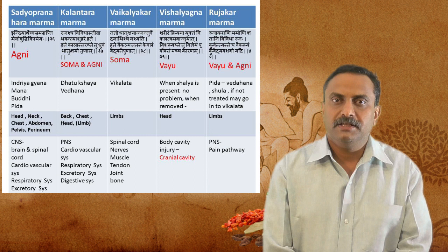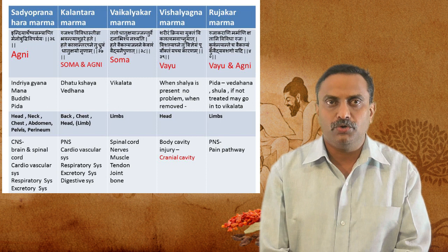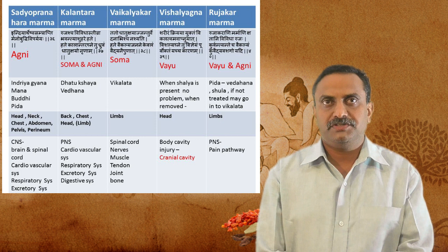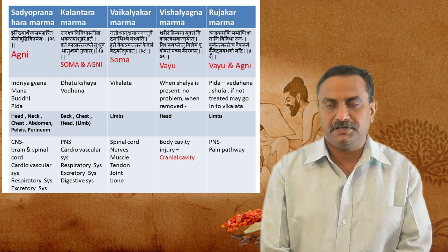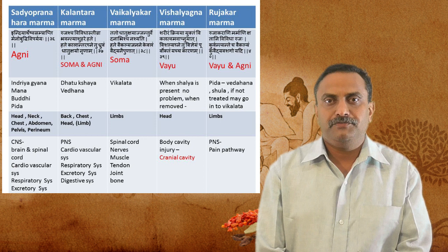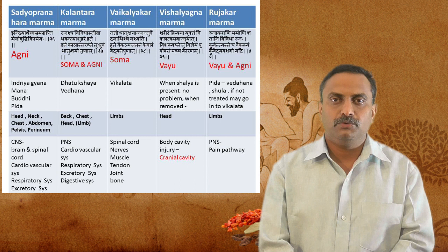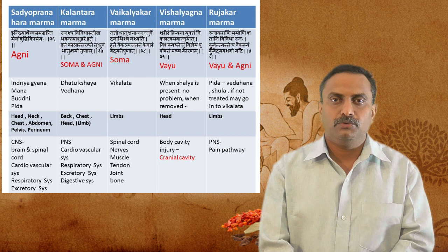Overall, injury effects can be broadly stated: injury to Sadyopranahara Marma involves the central nervous system, cardiovascular system, respiratory system, and excretory system — the person dies within seven days. Kalantara Pranahara Marma injury involves the peripheral nervous system, cardiovascular, respiratory, excretory, and digestive systems. Vaikalakara Marma injury involves the spinal cord, nerves, muscles, tendons, ligaments, and bones. Vishalakna Marma injury involves the cranial cavity (Utukshepa and Stapani Marma). Rujakara Marma injury involves the peripheral nervous system and pain pathways, causing severe pain.